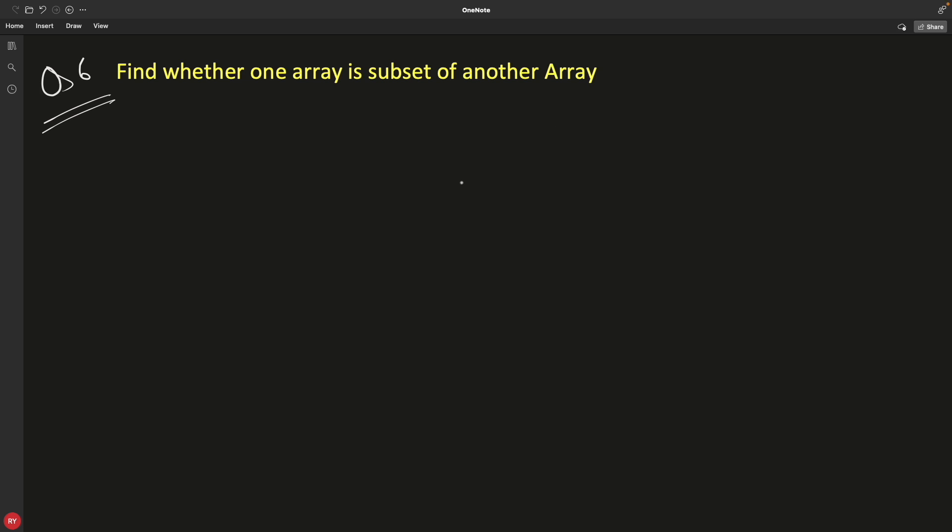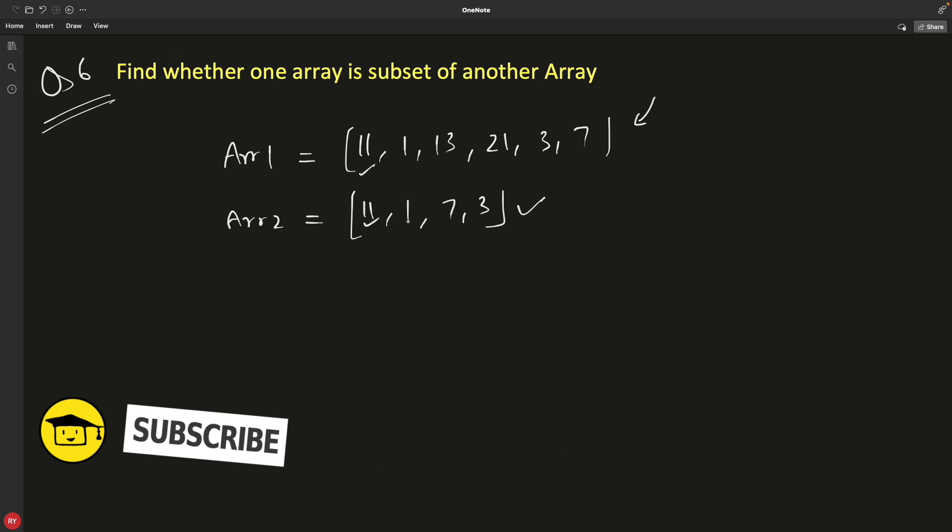This question is: find whether one array is subset of another array. If we have two arrays like this, is this array available in this array, meaning is this a subset of this one? Then yes. We have 11 here and 11 here, meaning this one is there inside. 7 is also present here and 3 is also present here. So array number 2 is actually a subset of array number 1. This is what we have to check.